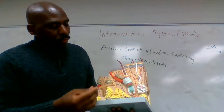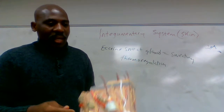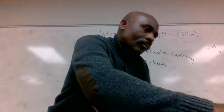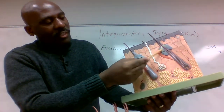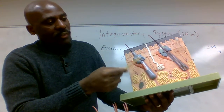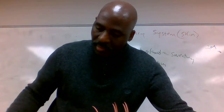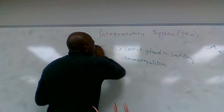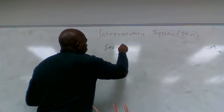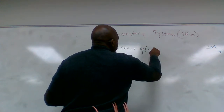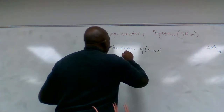The next structure is the sebaceous gland. Here we have a whole sebaceous gland and here is half of a sebaceous gland. The eccrine gland is over here. Let's talk about the sebaceous gland.